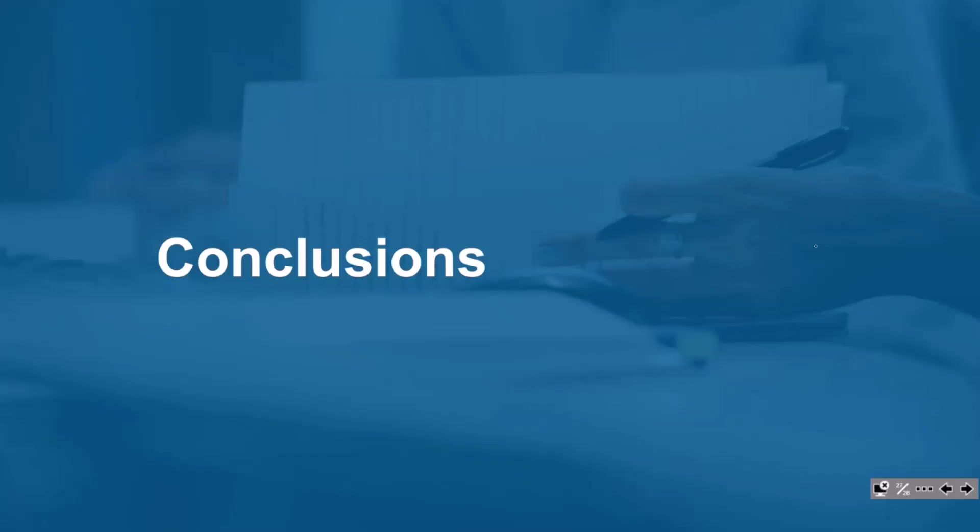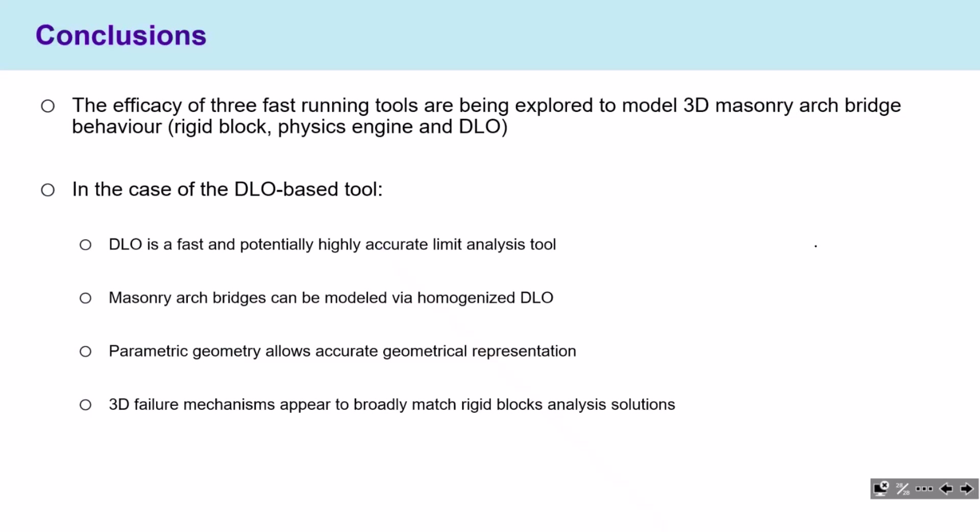In conclusion, we presented the efficiency of three fast-running tools: rigid block limit analysis, the physics engine, and discontinuity layout optimization. In particular, we showed how DLO can be applied to masonry arch bridges by introducing the concept of homogenization and parametric geometry. In general, there seems to be a good match between results obtained via rigid blocks and those from homogenized DLO with parametric geometries.